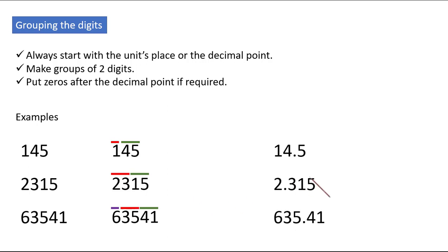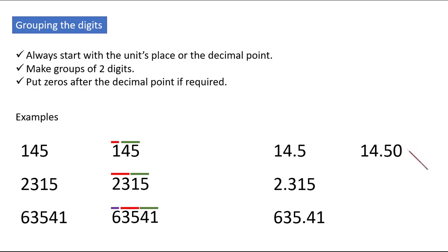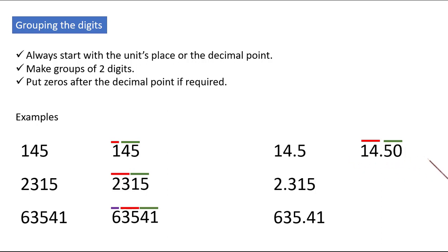But what if there are decimal points? If there is only one digit or an odd number of digits after the decimal point, we can insert a zero to make it a pair. For 14.5, 14 will be the first group — remember the grouping starts from the units place or the decimal point — and 50 will be the second group. The group starts from the decimal point and goes in both directions.